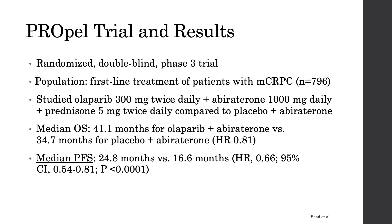The PROPEL trial looked at first-line treatment of patients with metastatic castration-resistant prostate cancer, comparing olaparib 300 mg twice daily with abiraterone 1000 mg daily and prednisone 5 mg twice daily versus placebo plus abiraterone. The trial found a median overall survival of 41.1 vs. 34.7 months and a median progression-free survival of 24.8 vs. 16.6 months in favor of the olaparib combination.